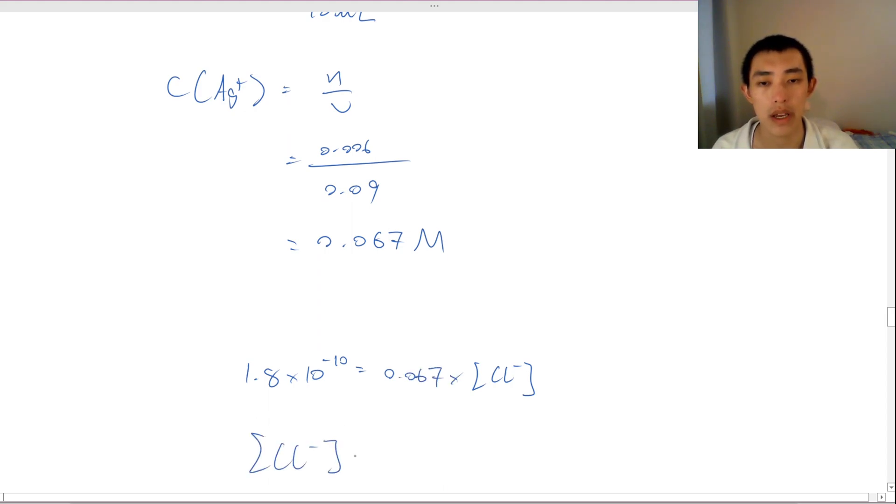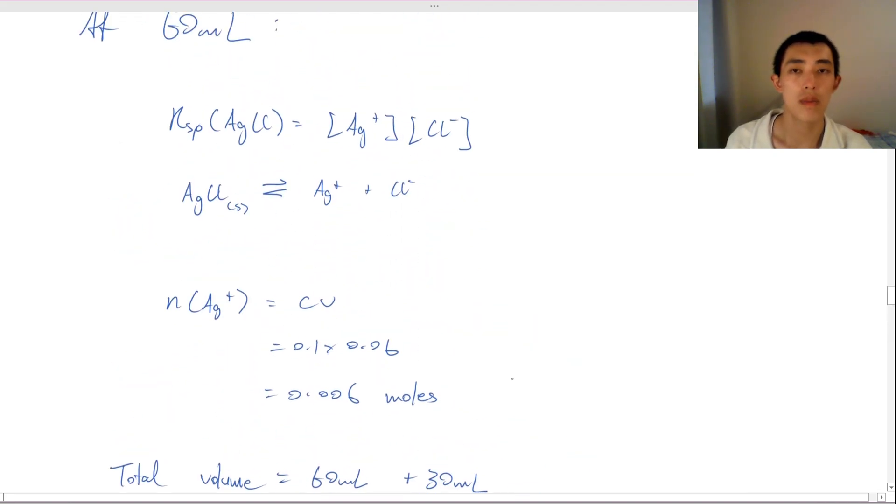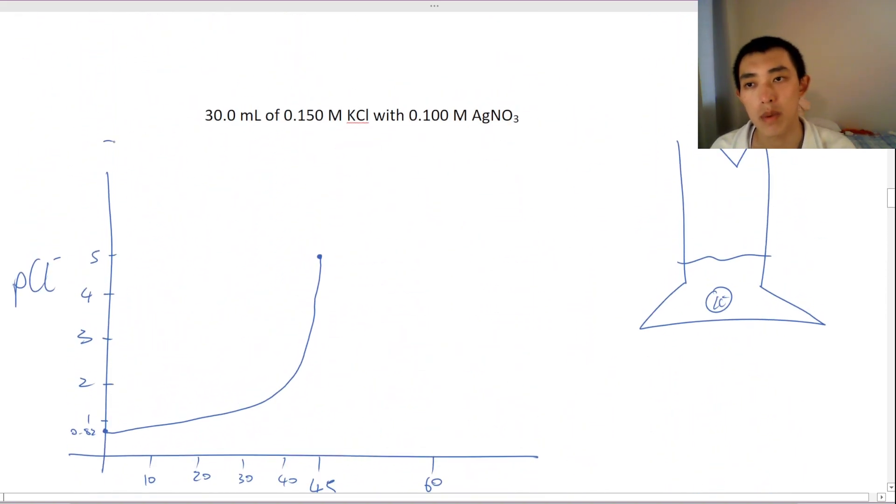This is going to be 0.067 times the concentration of chlorine. So, the concentration of chlorine that I have is going to equal to 2.69 times 10 to the power of negative 9 molar. So, my pCl is going to be about 8.57. So, let's put that onto here, onto my diagram, 8.57, maybe around here.